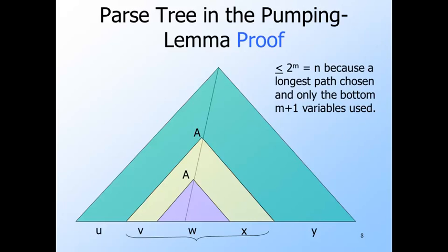Since the path shown is as long as any other, and that path has at most m plus 1 variables, we know by the lemma that we just proved that the yield of the yellow plus purple is no longer than 2^m or N. That is, the length of VWX is no more than N.